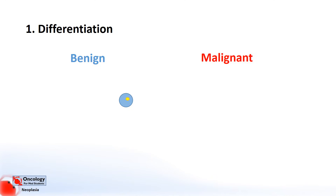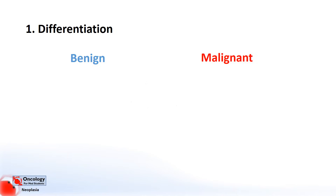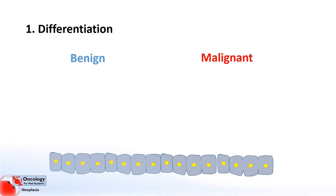Usually this occurs during development as cells become more and more specialized. For example, a cell here becomes a highly specialized cell in the nervous system called a neuron. In benign neoplasms, cells remain well differentiated — the cells look like the tissue they came from and they maintain their specialization.